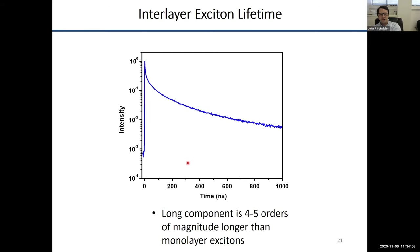You get a shorter lifetime component of typically about 10 or 20 nanoseconds and then a longer lifetime component we're just now understanding. My group is in the process of finalizing a paper on these long-time dynamics. But compared to the monolayer, which had a lifetime of less than a picosecond, the interlayer exciton has a shorter component of about 20 nanoseconds and longer components of typically 200 to 500 nanoseconds. So we've increased the exciton lifetime very significantly.